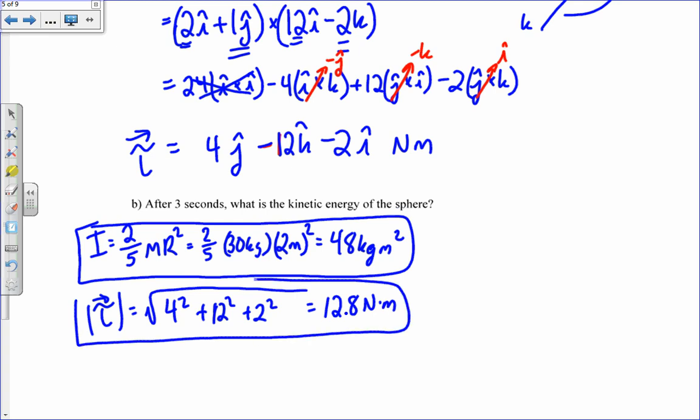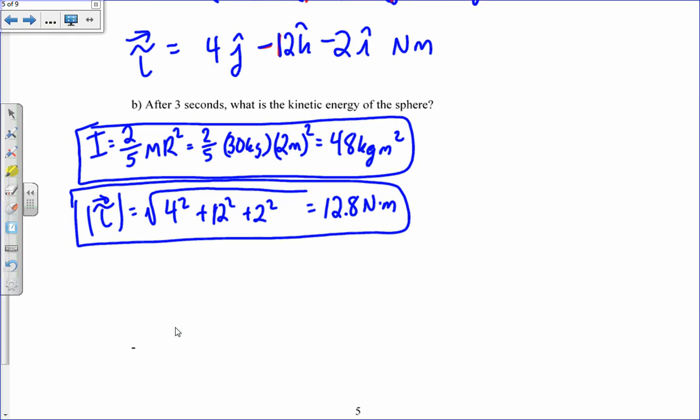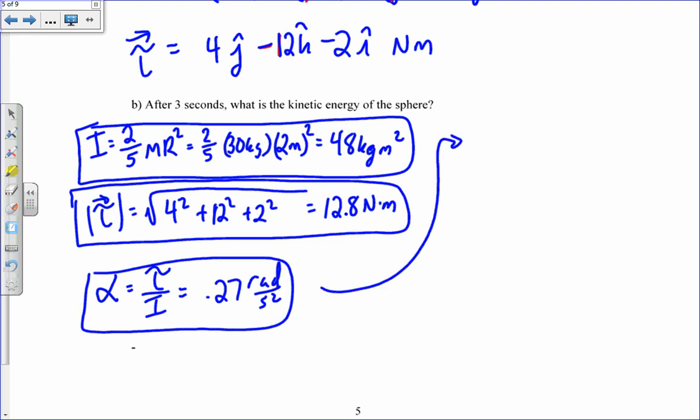Then you can find alpha, which is torque over i. Torque is 12.8 over 48, which is 0.27 radians per second squared. Then you find omega, which is alpha times t. I know this because omega naught equals zero. It's 0.27 times 3 seconds, which is 0.8 radians per second.